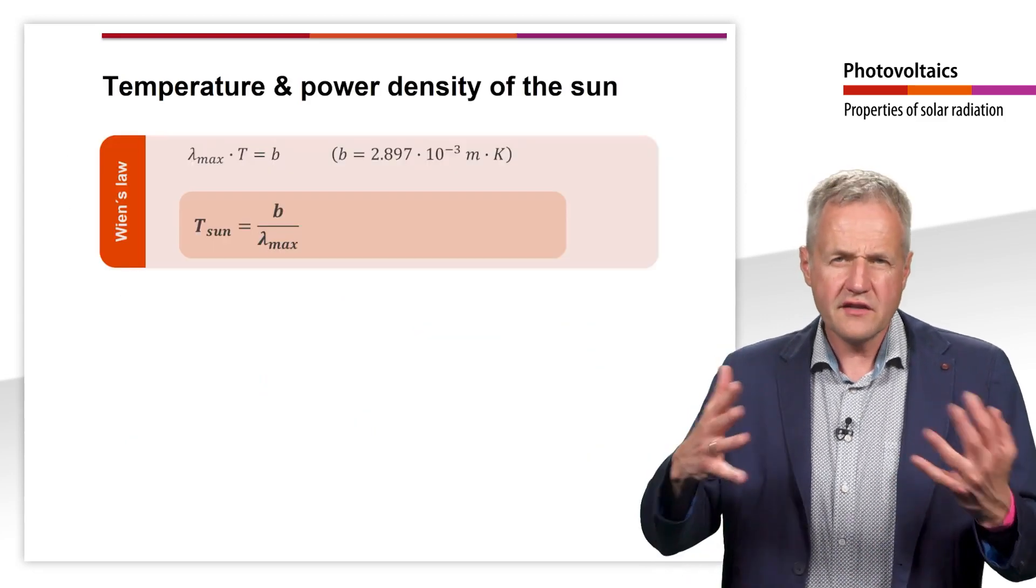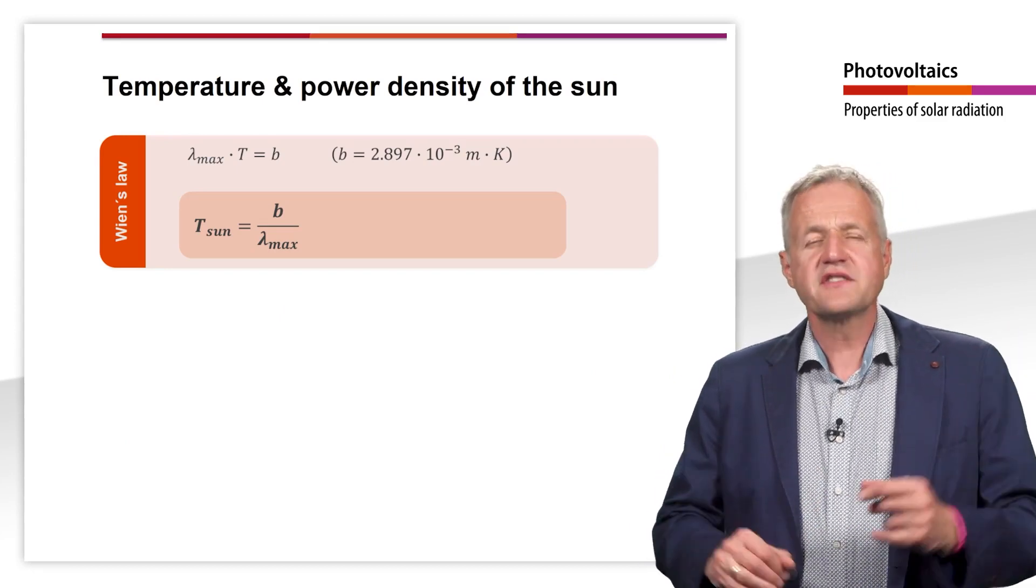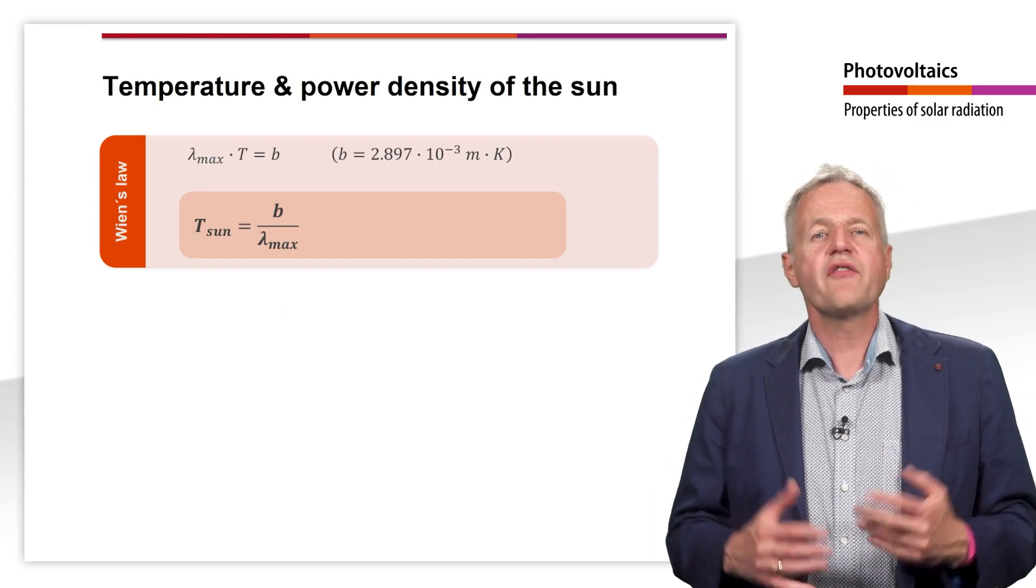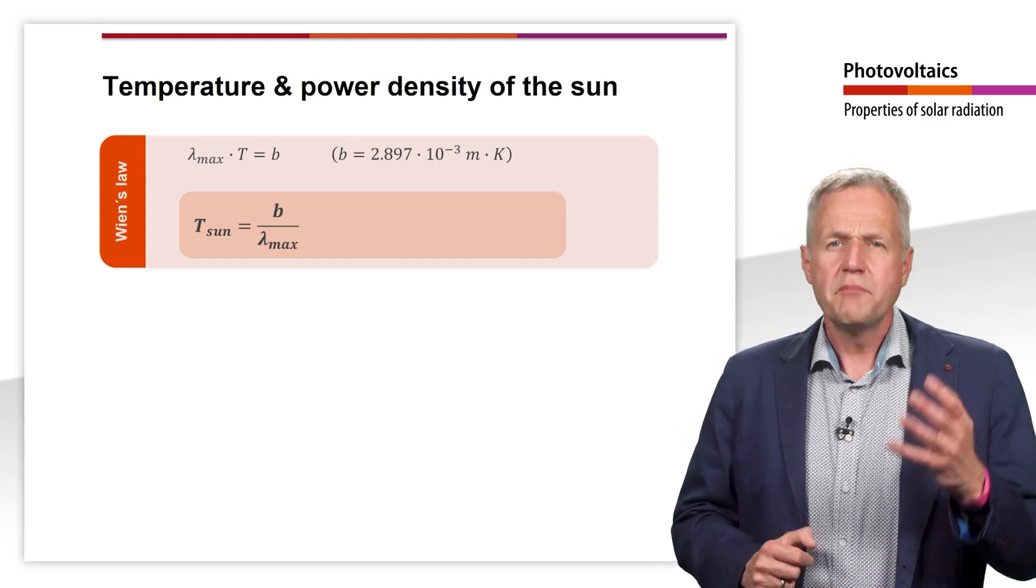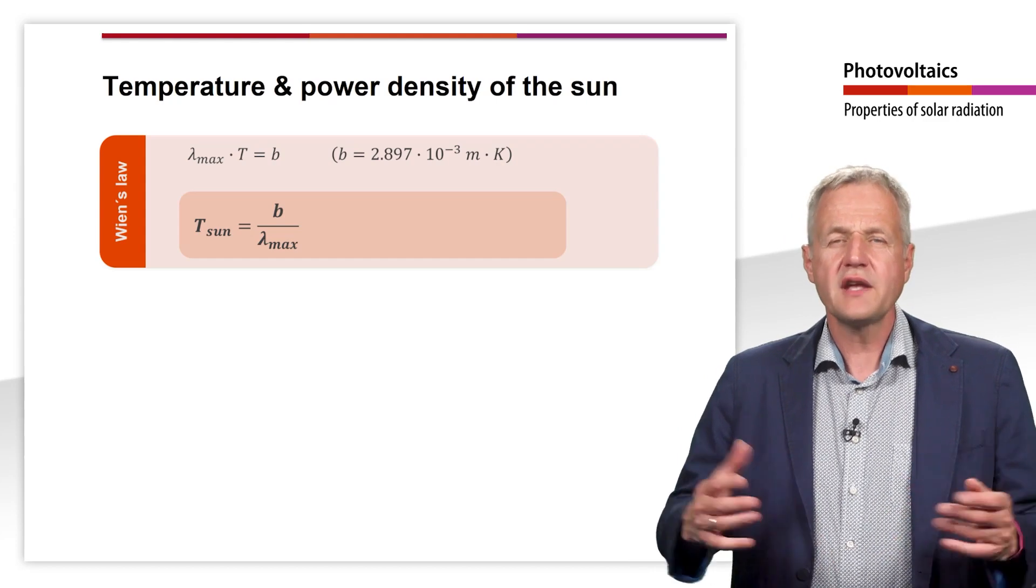According to Wien's law, the temperature of the radiator and wavelengths of maximum intensity are related to each other via the constant B. B has a value of around about 0.003 meter Kelvin.